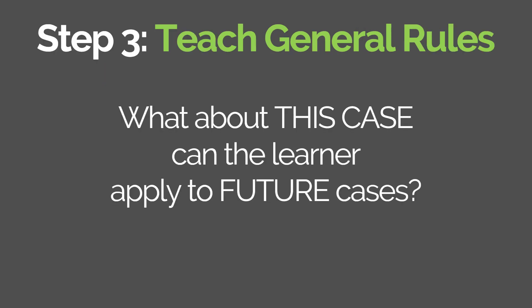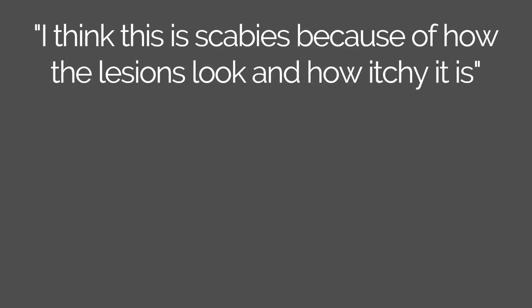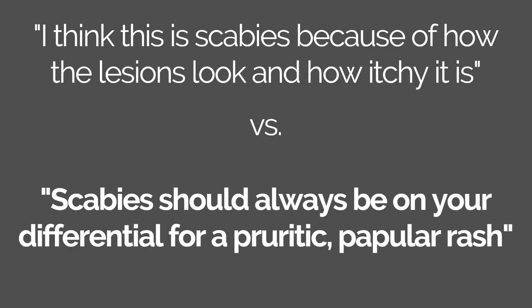Step 3 is my favorite — it's teaching general rules, thinking about what about this case can the learner apply to future cases. Let's say we're seeing a patient in clinic with a very itchy rash on the hands and feet for about a week. I could say I think this is scabies because of how the lesions look and how itchy it is, but I'm not completely confident that the learner would know how to apply that teaching point to future cases. So instead, I could offer a general rule such as: scabies should always be on your differential for a pruritic papular rash.